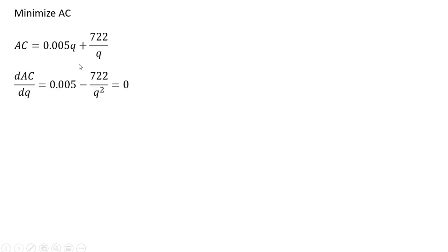The derivative of 0.005q is 0.005, and the derivative of 722 divided by q, using the quotient rule, gives us this result. And because we're minimizing, we're setting this derivative equal to 0.